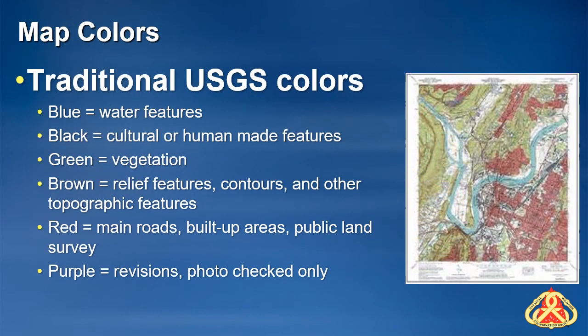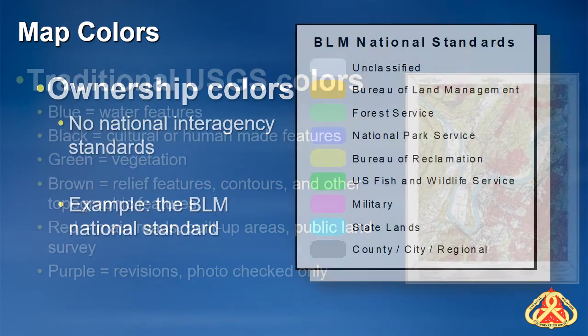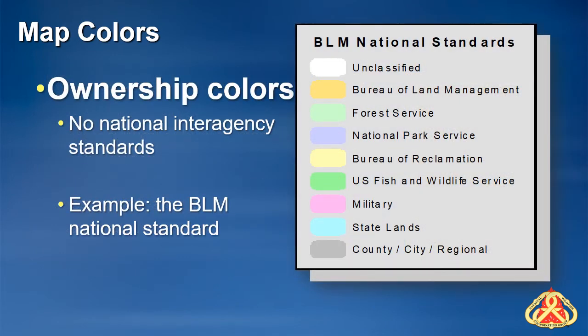Regarding map colors, traditionally USGS colors are used on the topographic backgrounds on IAPs and some other maps, with the exception that the green for vegetation is often turned clear to improve visibility of fire features. There are no national interagency standards for ownership colors; however, this is an example of the Bureau of Land Management's national ownership color standard. You can find this in the job aids on the Geo Ops website.